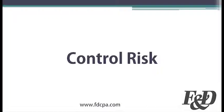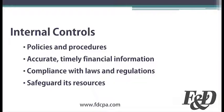Or, what is the risk that the organization's internal controls will not prevent or detect a misappropriation of its resources or a misstatement of its financial statements on a timely basis? An organization's response to the risk considerations is the embodiment of its internal controls. Internal controls represent the policies and procedures to ensure that an organization has accurate, timely financial information, that it complies with all laws and regulations, and that it safeguards its resources.